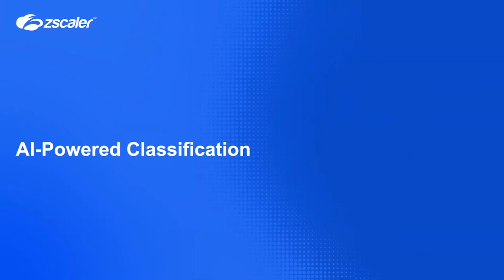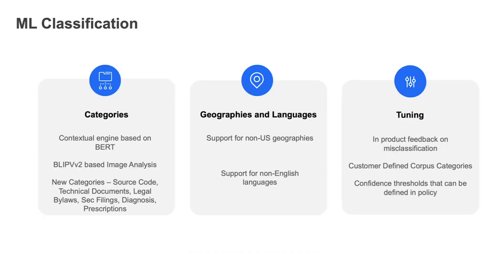AI-powered classification — we're making a fundamental change in how data can be classified. We're moving away from just simple regex, EDM, IDM, OCR — the legacy techniques — and adding ML-based classification. This ML-based classification provides contextual classification for both text as well as non-text-based data. For text, we have a new BERT-based contextual engine which understands the complete context of the data.